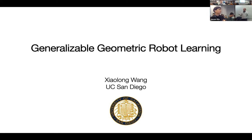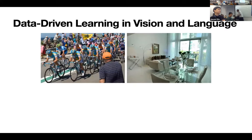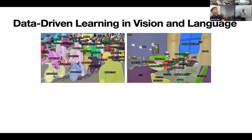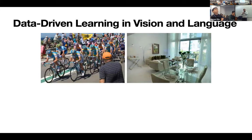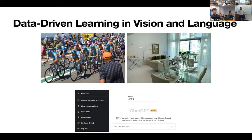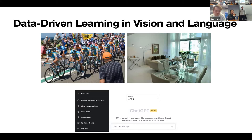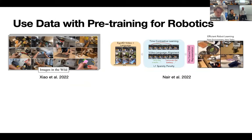I firmly believe in a data-driven approach to robotics. This approach has turned out to be quite successful — we have very good systems for recognition. The same effort is now being migrated to robotics as well. There are works trying to do self-supervised pre-training to learn large models and then transfer to robotics tasks.